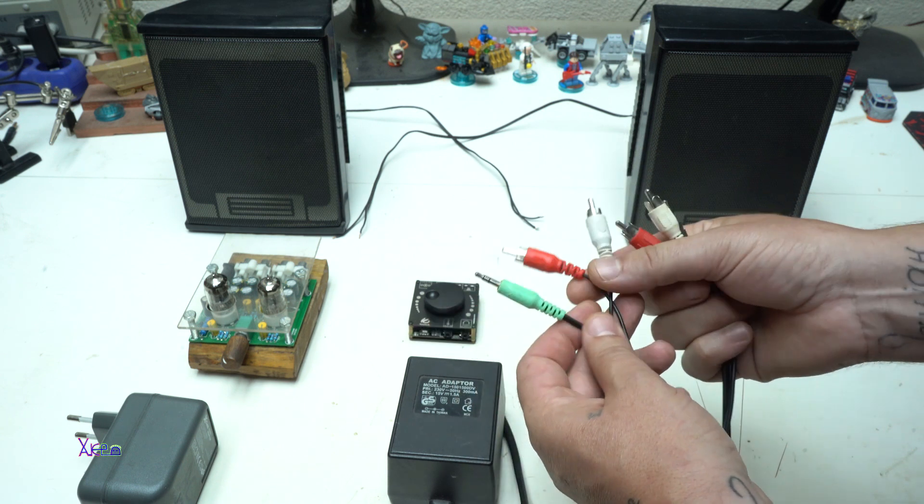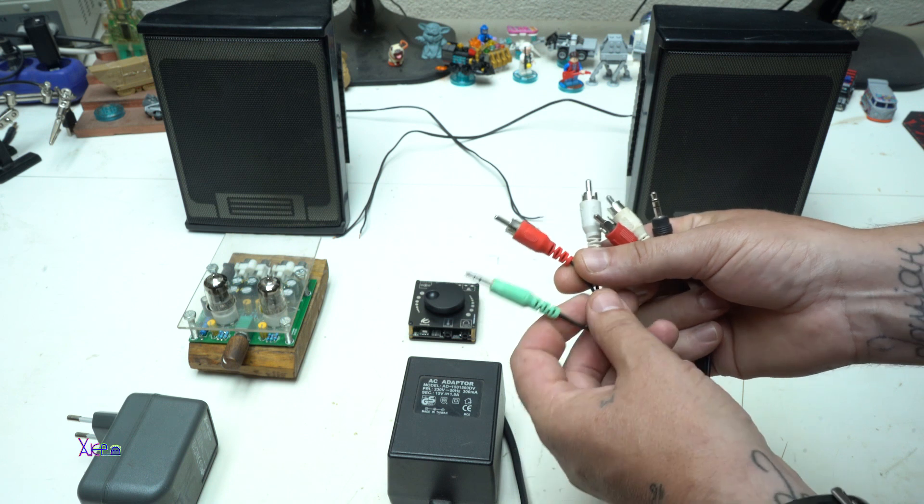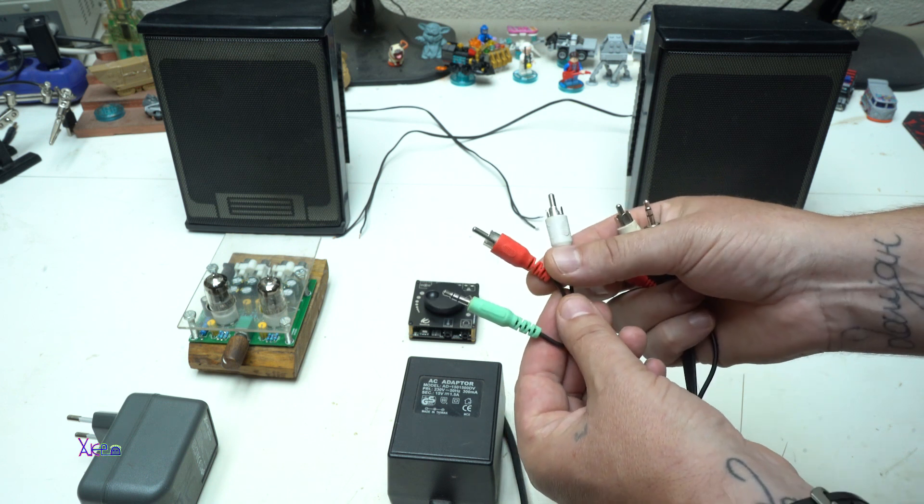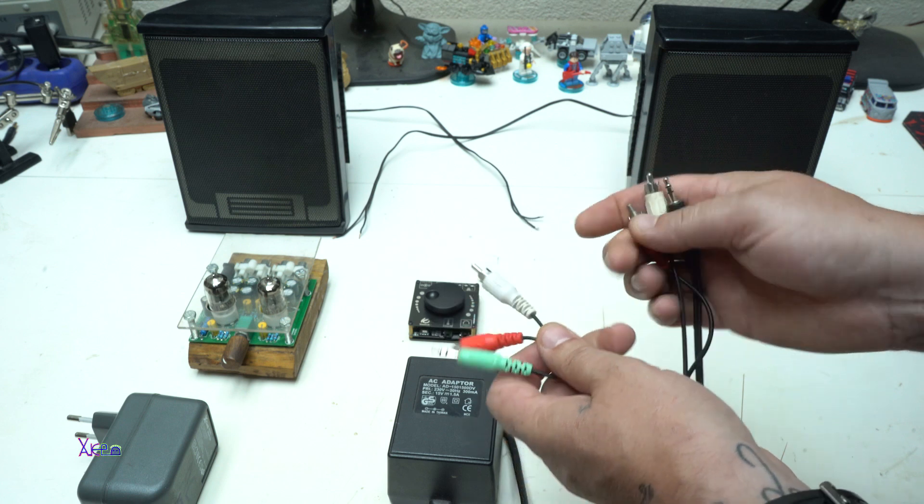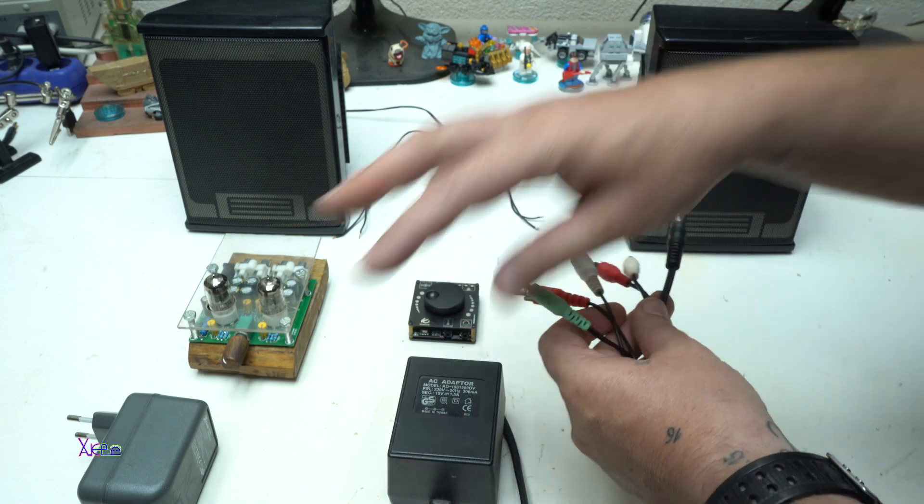The AUX cable is 3.5mm jack on one side, and on the other side we have RCA jacks, left and right. Let's hook up everything now.